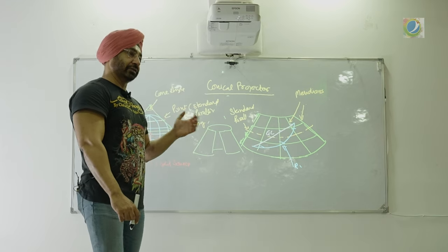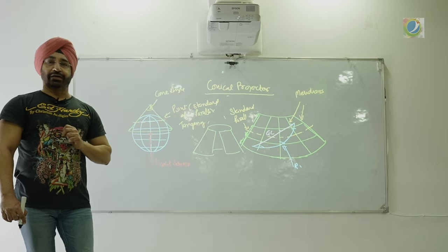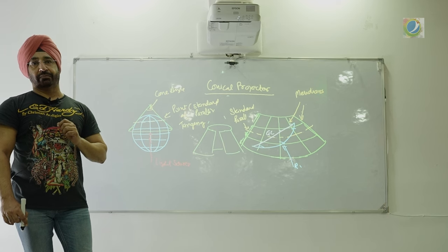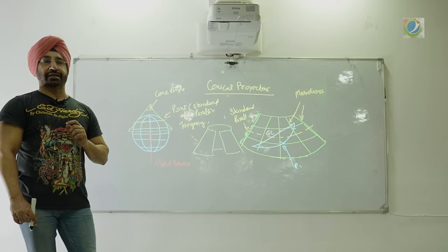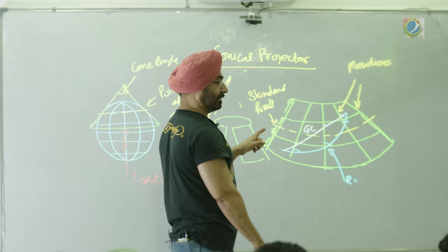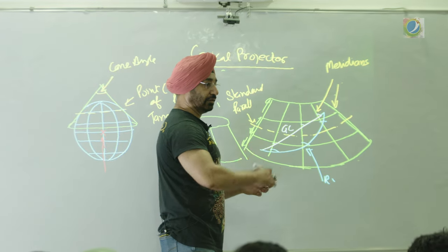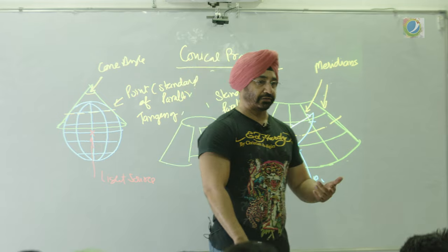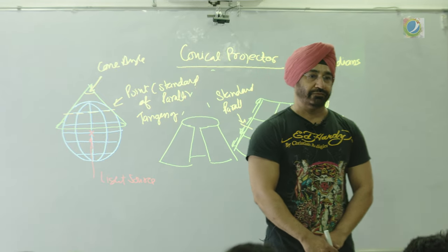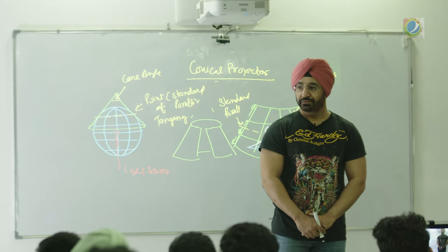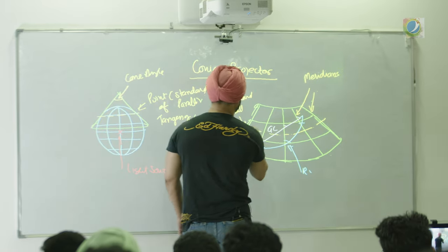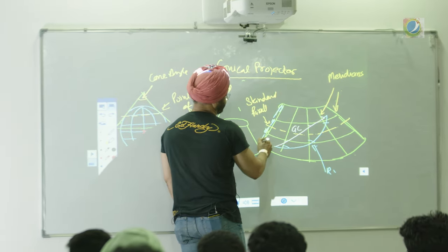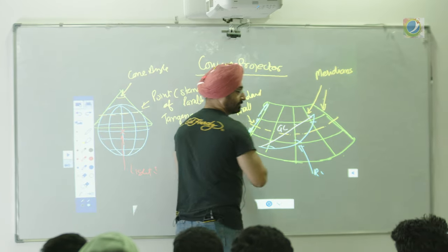Coming back to the properties: great circle is almost a straight line — why almost, we will see later. And rhumb line is a curved line concave to the nearest pole or equator. This is your conical projection. But again, there is a problem — the scale is correct at standard parallel, but either side of the standard parallel it starts expanding again, so it is no longer an orthomorphic projection.